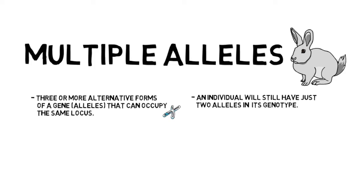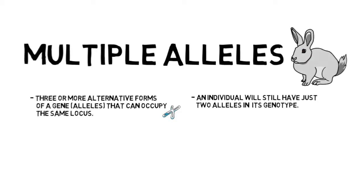In other words, you work through the Punnett Square in the same way, as each parent only has two alleles to offer. The difference is, there are more possible genotypes for a certain phenotype.